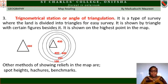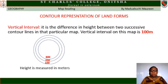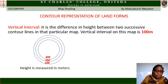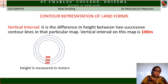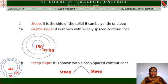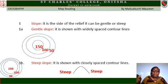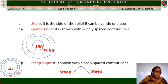Other methods of showing relief on a map include spot heights, hachures, benchmarks, and contour representation of landforms. Vertical interval is the difference in height between two successive contour lines. The vertical interval on this map is 100 meters — 200 is 100 meters above 100, and 300 is 100 meters above 200. The slope of the relief can be gentle or steep. A gentle slope is shown with widely spaced contour lines, while a steep slope has contour lines that are close together.